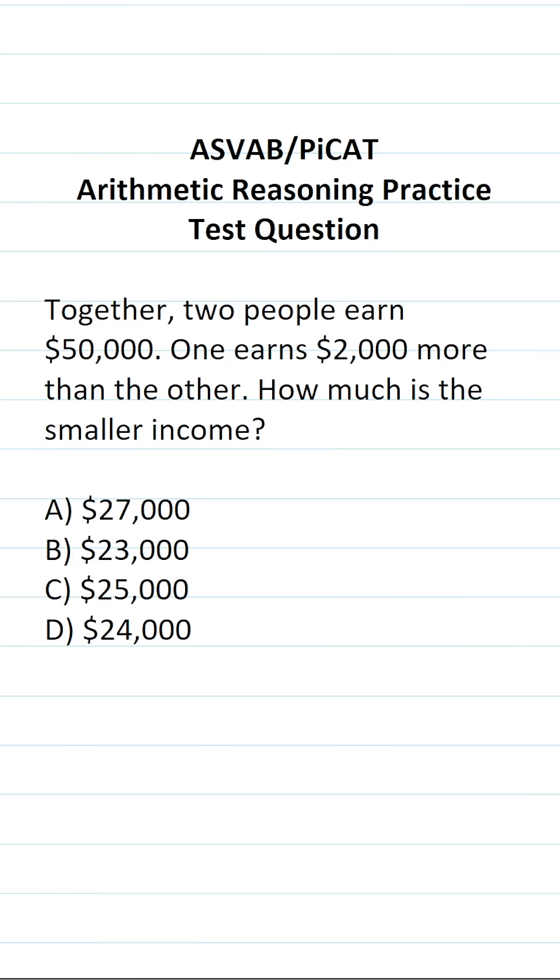This arithmetic reasoning practice test question for the ASVAB and PiCAT says, together two people earn $50,000. One earns $2,000 more than the other. How much is the smaller income?